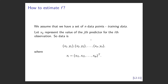How do we estimate f? We assume we have some training data with n observations. The notation xij is the value of the jth predictor on the ith observation. Your data will have a load of features for the first observation plus the response variable, features for the second observation, etc. For the first observation, y would be the sales amount and you'd have how much was spent on TV, radio, and so on.